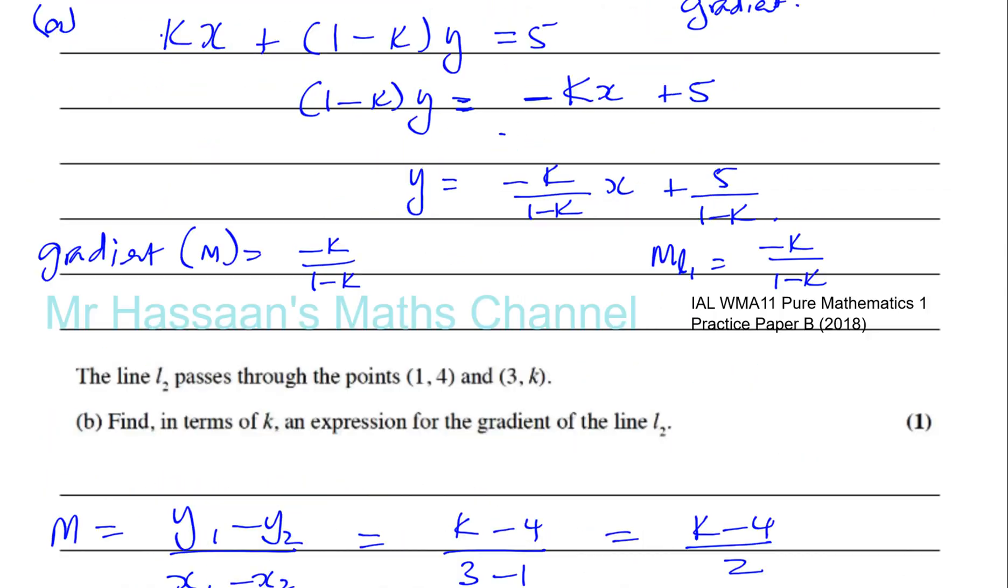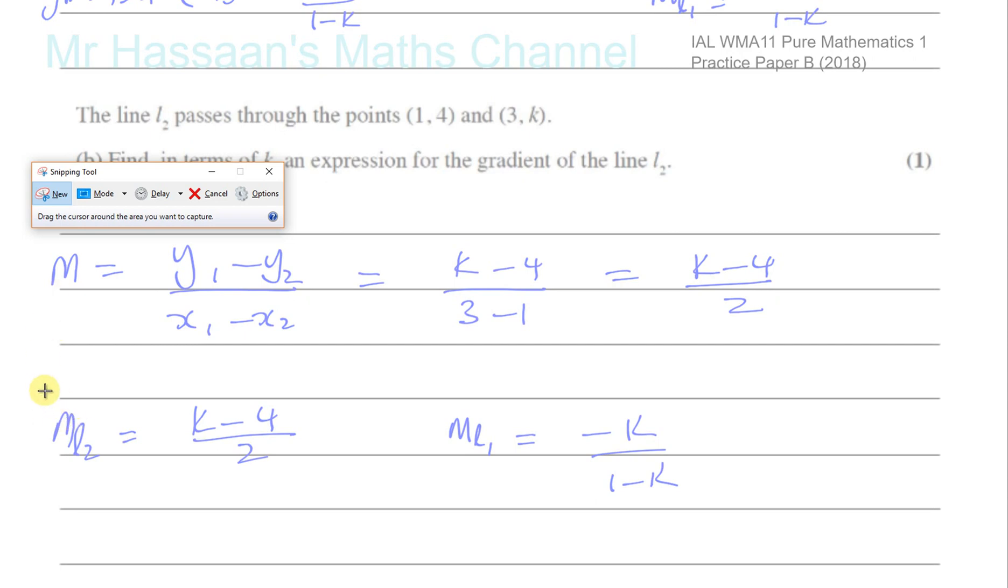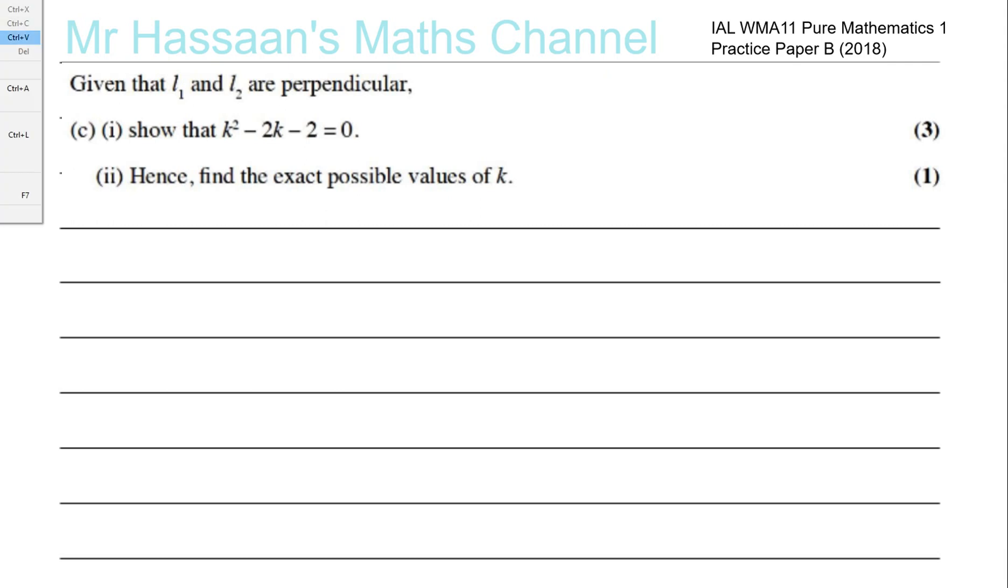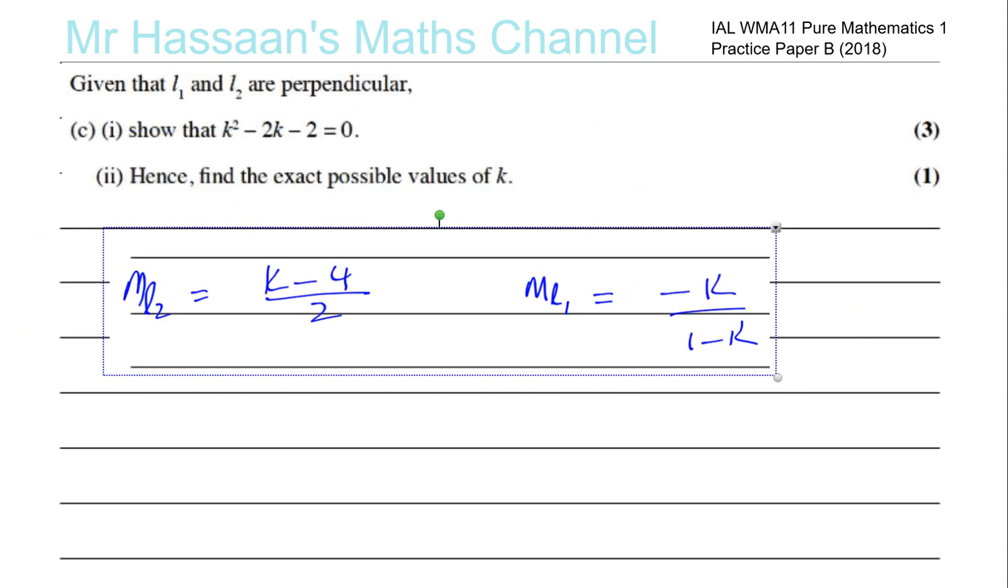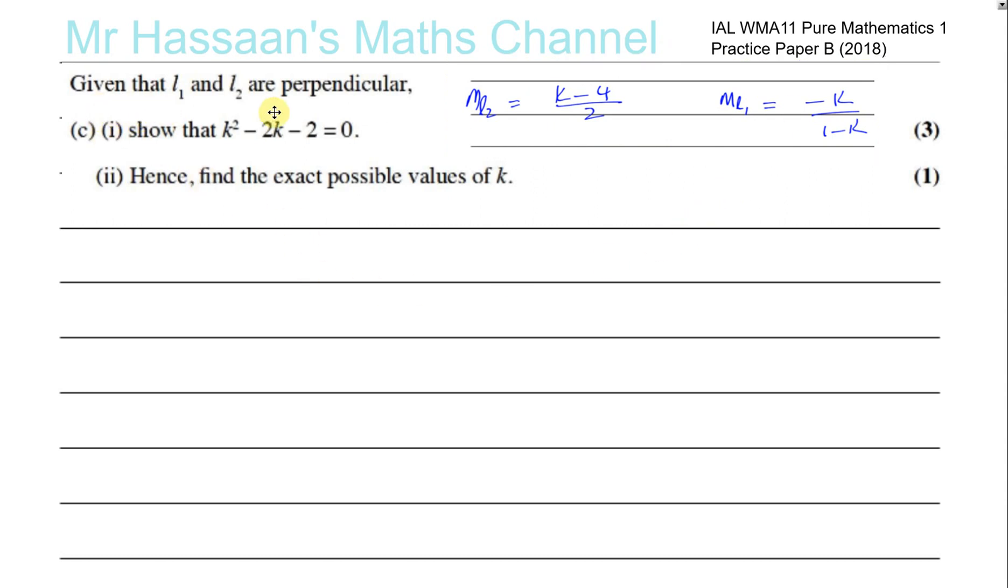And then part C. Let me just write here, the gradient of line 1 was minus K over (1 minus K). And let me take this so I don't make a mistake. So those are the results we got earlier. So it says, given that line 1 and line 2 are perpendicular, show that, and then we're going to show some expression or equation in terms of K.